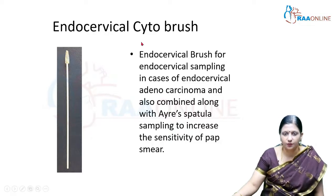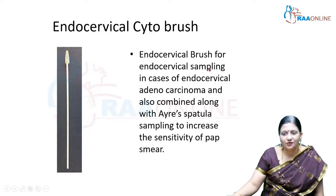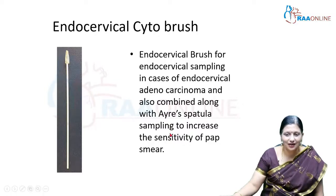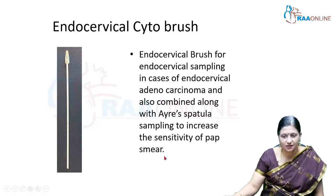The endocervical cytobrush is used for endocervical sampling in cases of endocervical adenocarcinomas. It can also be combined with the Ayre's spatula during Pap smear sampling to increase the sensitivity and specificity for detection of cervical cancer.